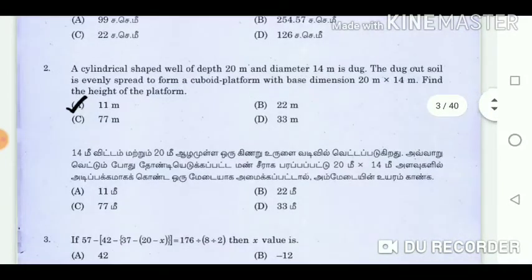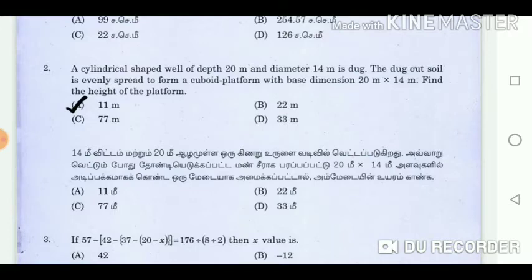Question 2: A cylindrical-shaped well of depth 20 metres and diameter 14 metres is dug. The dugout soil is evenly spread to form a cuboid platform with base dimensions 20 metres by 14 metres. Find the height of the platform. Answer: 11 metres.